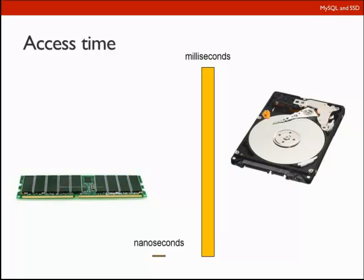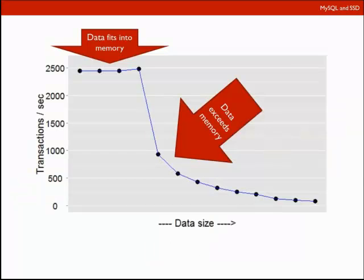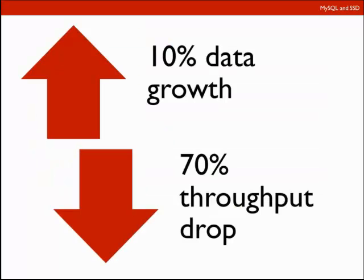In fact, my diagram does not show the real picture, because if I had to put it in real scale, I would need a million pixels on my screen. This million-times difference gives us a dramatic performance hit as soon as we start accessing disks. When data fits into memory we have one performance level, and as soon as data exceeds memory we see a very significant drop — in some cases a 10% data increase causes a 70% throughput drop.